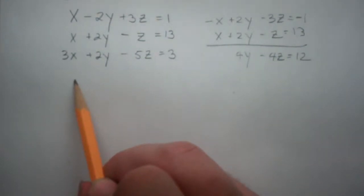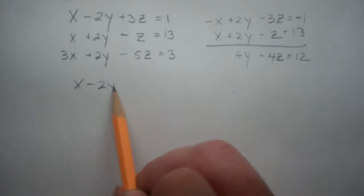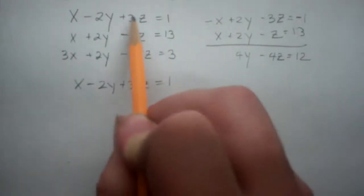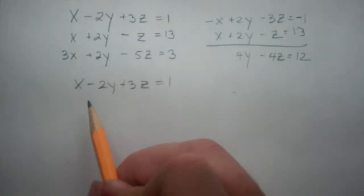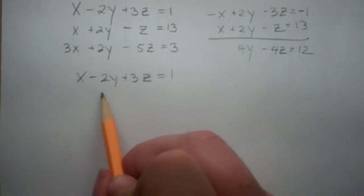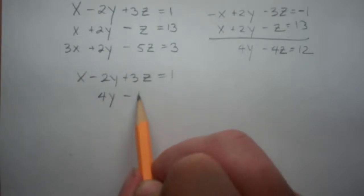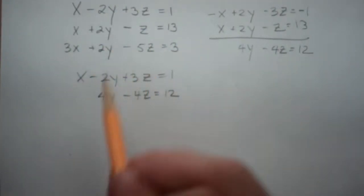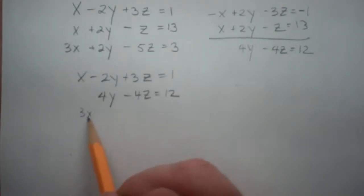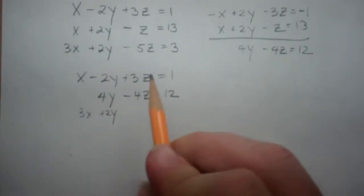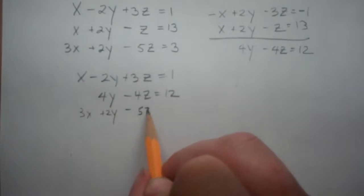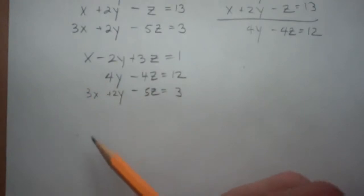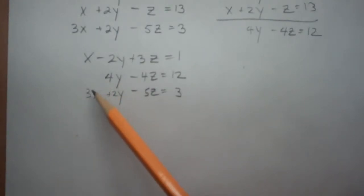This gives us a new second equation for the system, so let's write it out again. We have x minus 2y plus 3z equals 1. We then replace the second equation with 4y minus 4z is equal to 12. And we still have the bottom equation: 3x plus 2y minus 5z is equal to 3. All right, so we've gotten rid of the x in the second equation. Let's get rid of the x in the third equation next.